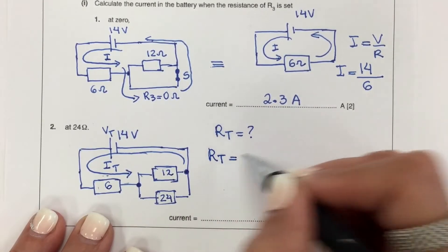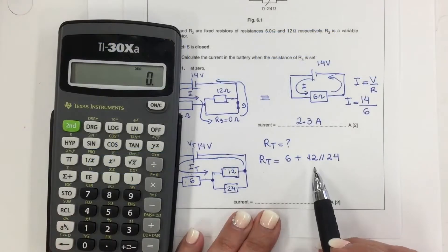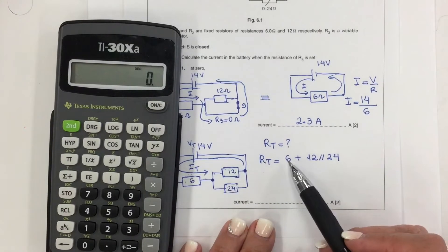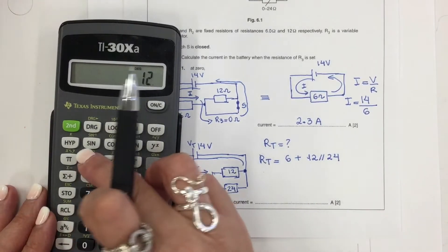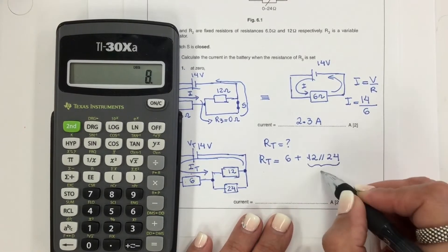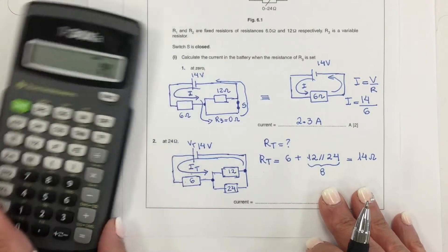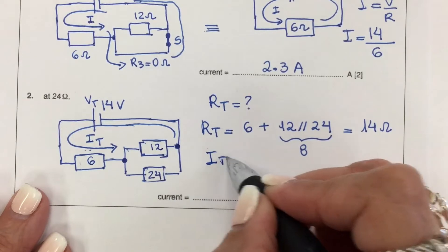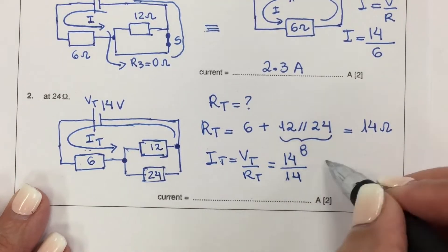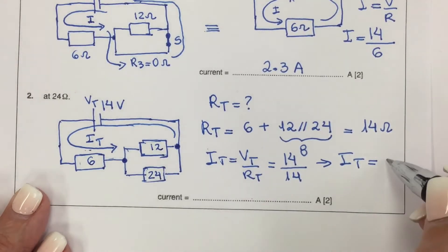So my RT is 6 plus the parallel combination of 12 ohms and 24 ohms. First I calculate the parallel resistance of 12 and 24: 1/12 plus 1/24 inverse gives 8 ohms. Then 8 plus 6 equals 14 ohms — that's the equivalent resistance. Now IT = VT / RT = 14 volts / 14 ohms, giving a total current of 1 amp.